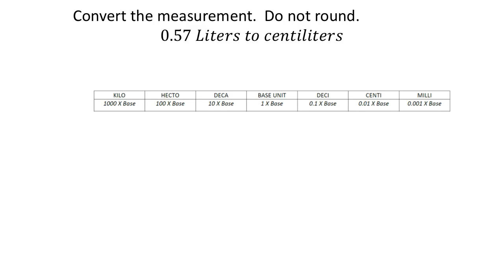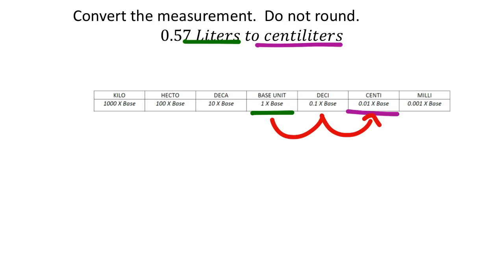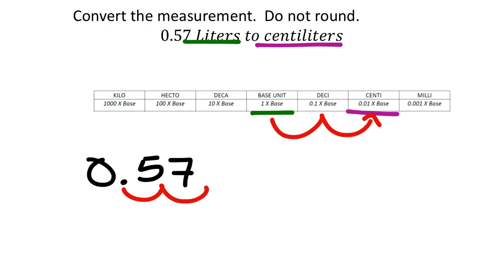Converting 0.57 liters to centiliters: liters is our base unit and centiliters is two place values to the right on the chart. Taking 0.57 and moving the decimal two places to the right — one, two — gives us 57 centiliters.